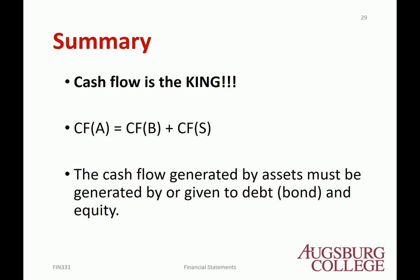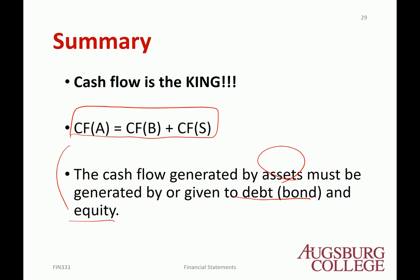After computing everything, you have to verify that cash flow from assets equals cash flow to bondholders plus cash flow to stockholders. In summary, cash flow is the king — it is the most important factor in finance. The identity rule states: cash flow from assets equals cash flow to bondholders plus cash flow to stockholders. The cash flow generated by all assets must be distributed to those who provided the financing — debt (bonds) and equity (stock). This is the end of Chapter 2.